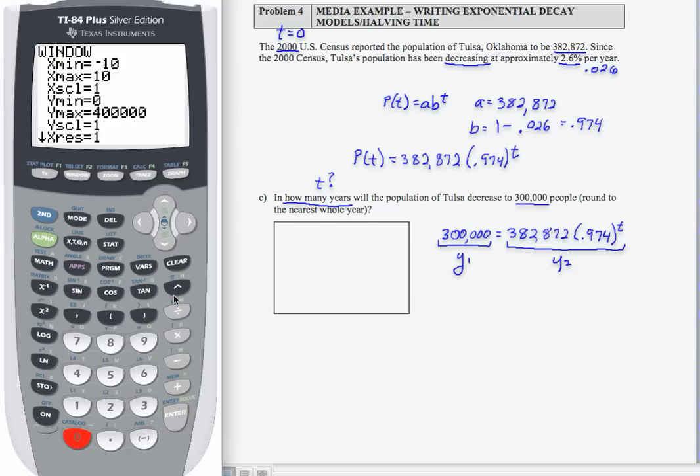So I'm going to make my maximum larger than the A value of my function. So let's see if that works. I'm going to write the window here. You should always include the window when you're asked to solve graphically. So let's see, negative 10 to 10, that's for input, and 0 to 400,000, that's for output.